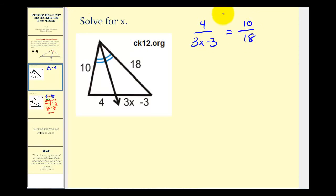Now to solve for X again we'll cross multiply. So we have 10 times 3X minus 3 equals 4 times 18, which gives us 72. Distribute the 10.